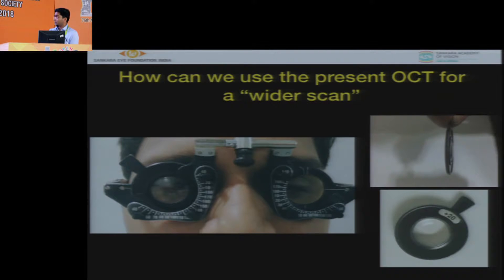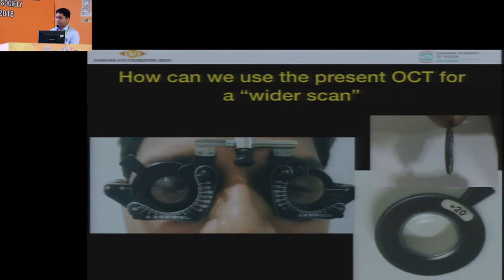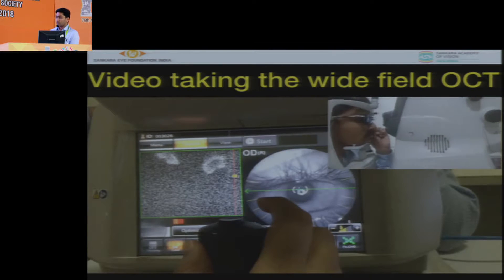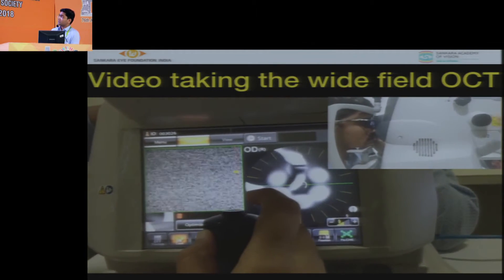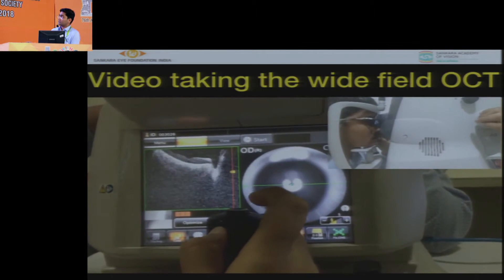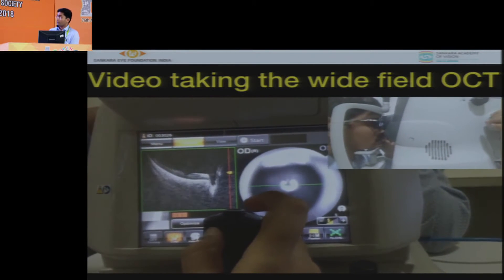What you need is already available with you - a trial frame and a 20-diopter lens. And how it has to be done, as you can see the trial frame has to be put on and the 20-diopter lens has to be kept and you just go close to the eye and you would start seeing a wider OCT.